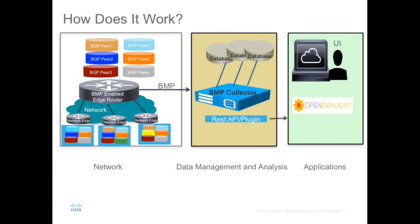Here's a quick picture of how it works. You have your network with lots of BGP peers. You enable BMP, preferably on your edge router, and configure it to send data to a collector server. It then captures every packet that comes from a BGP peer to the collector with a per-peer header. The collector parses the data and inserts it into tables — we use MySQL. Access to the database is through a REST API, or you can have a plugin that talks to an SDN controller such as OpenDaylight.